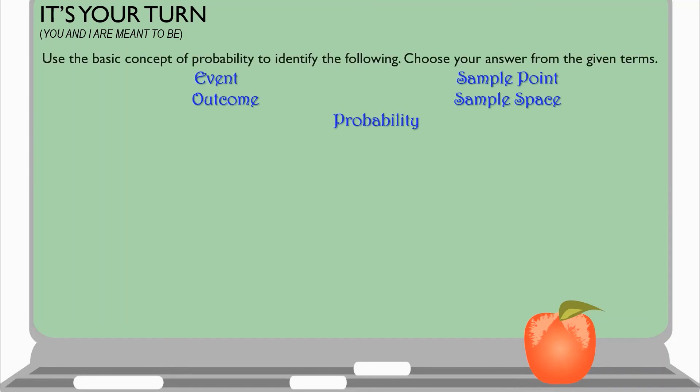For the first activity, we have, you and I are meant to be. So, direction. Use the basic concept of probability to identify the following. You can choose your answer from the given terms. We have here the event, outcome, probability, sample point, and sample space. I will give you 1 minute to answer the 5 questions.